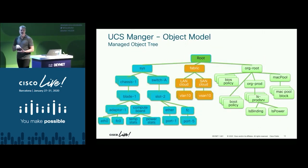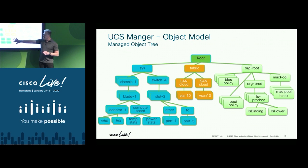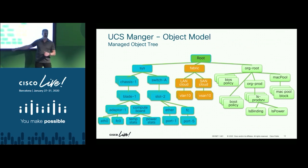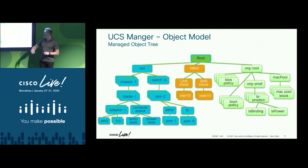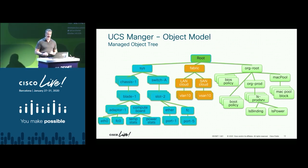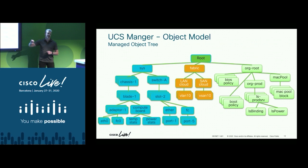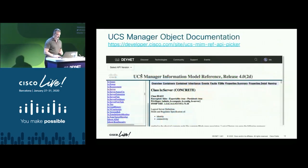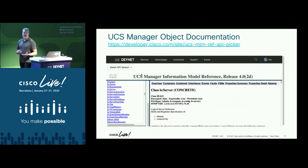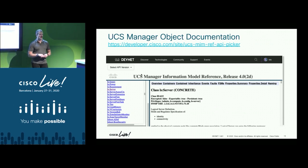A small portion of the object model is broken up with logical entities, physical entities, statistics attached to physical entities, the fabric, and the organizations. It's a hierarchical model where organizations are broken out from the fabric and from the physical entities. For programmability tools, you need to understand what that model looks like, what's in it, and what attributes the objects have available to them.